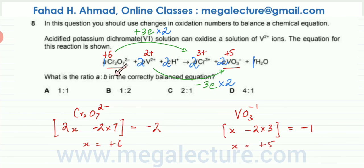Now the question was, what is the ratio of A and B in the correctly balanced equation? So there's 1 Cr₂O₇²⁻ and 2 V²⁺ in the equation. So it's 1 ratio 2, so the answer is going to be B.